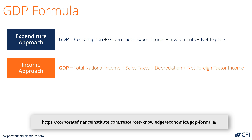The income approach to GDP takes total national income — which is personal income, plus corporate income, plus rental income, etc. — plus all sales taxes collected, depreciation, and foreign factor income. To learn more about this, check out the article listed below that has a full breakdown and explanation of these formulas.